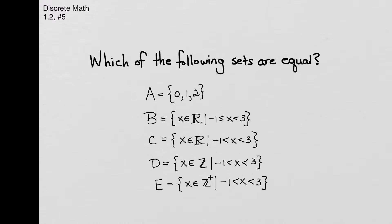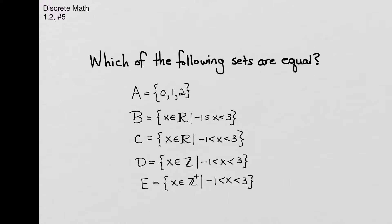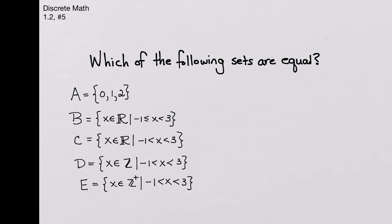Now let's take a look at set B. This is expressed in set builder notation, and it says the set of all X element of the real numbers, such that negative 1 is less than or equal to X is less than 3. So I'm going to move this all over a little bit, make some room. So what do we mean by this?